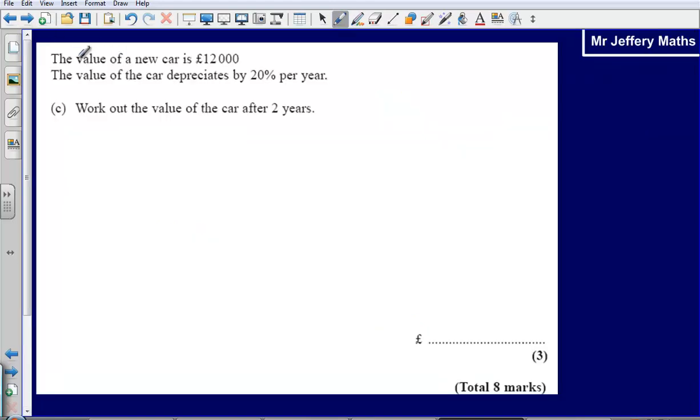Part C. The value of a new car is £12,000. The value of the car depreciates by 20% per year. Work out the value of the car after 2 years. So first things first. Let's start by saying, OK, this is the amount of money that it costs at the beginning. And we know that that is £12,000.